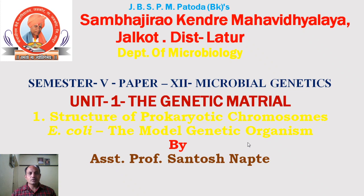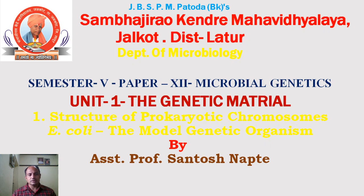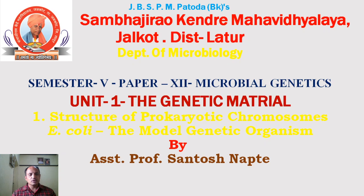In our last many lectures we have studied about the genetic material. This is Unit 1 of Semester 5, Paper Number 12, that is Microbial Genetics. Today we are going to study the last subtopic of this unit: the structure of prokaryotic chromosome, and then we will see E. coli as a model genetic organism.